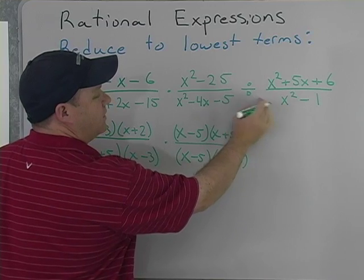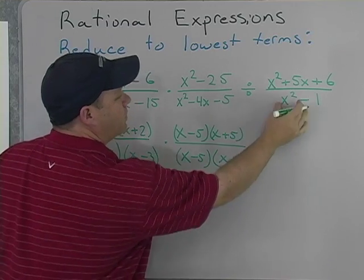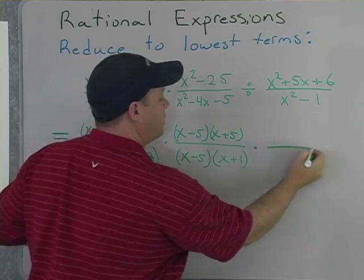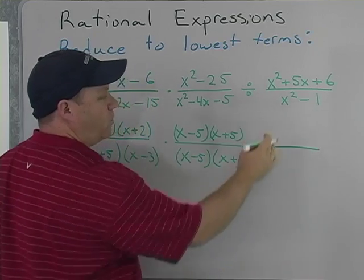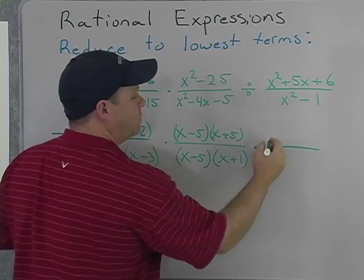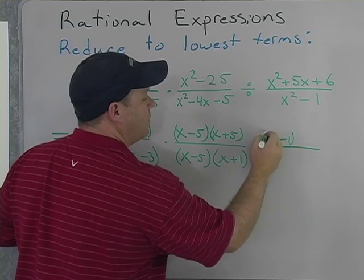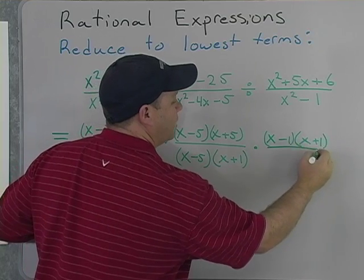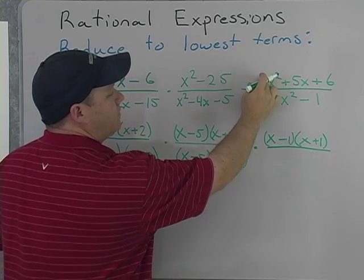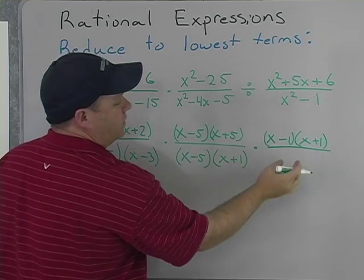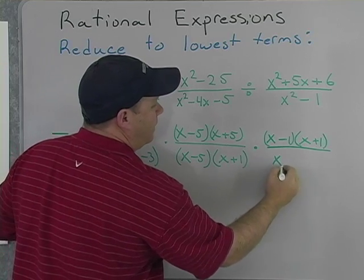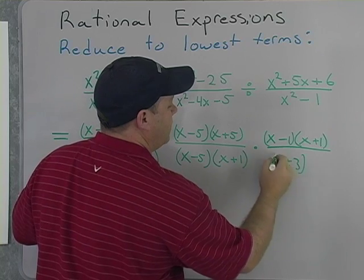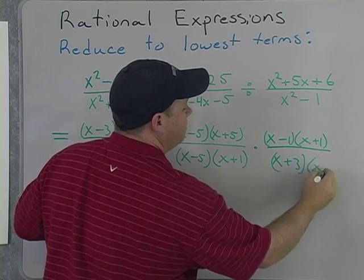Finally, we're going to rewrite this as multiplication of the reciprocal. So this x squared minus 1, we're going to write in the numerator, and we're going to factor it. Once again, this is the difference of two squares. You should be able to recognize this by now. We're going to rewrite that as x minus 1 times the quantity x plus 1. The numerator here is going to become the denominator. We're going to rewrite that as x plus 3 times the quantity x plus 2.